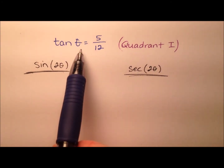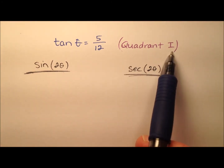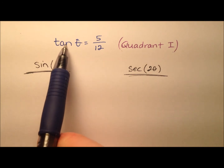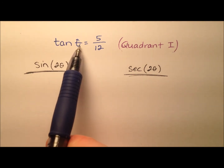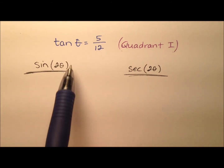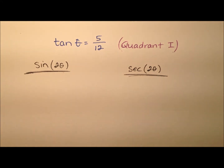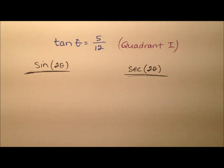In this example, we have some angle theta, and theta is going to be in the first quadrant. We know that the tangent of this angle theta is going to be 5 over 12. Based on this information, we'd like to find a couple of values. If you'd like to try to find those values first, go ahead and pause the video and do so, and then come on back and we'll work these together.